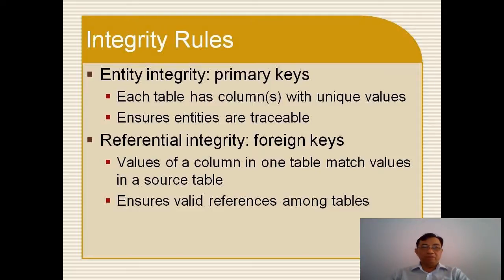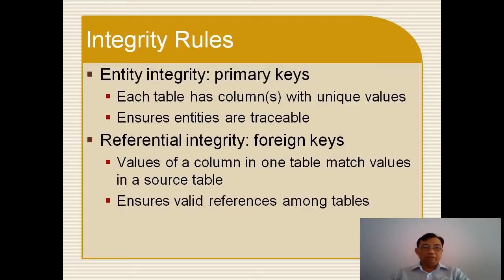For example, student rows are uniquely identified by student social serial number. Offering rows are uniquely identified by offer number. Enrollment rows are uniquely identified by the combination of student social serial number and offer number. Enrollment's student social serial number refers to a valid student social serial number in the Student table. And the offering number of the Enrollment table refers to a valid offering number in the Offering table.